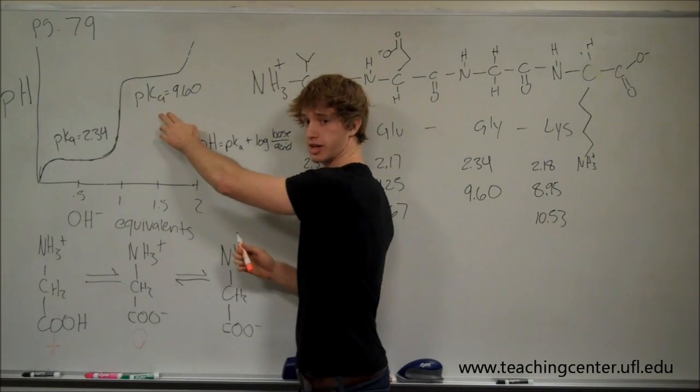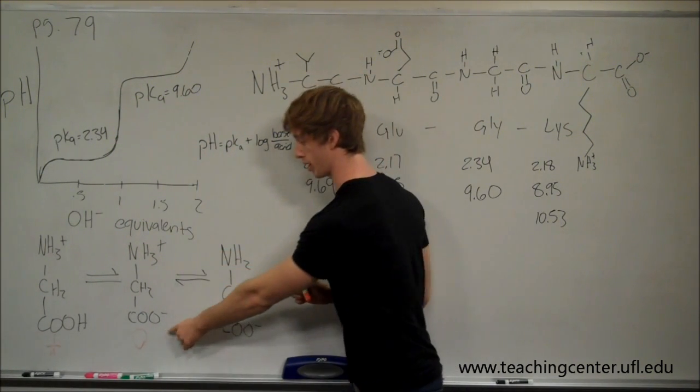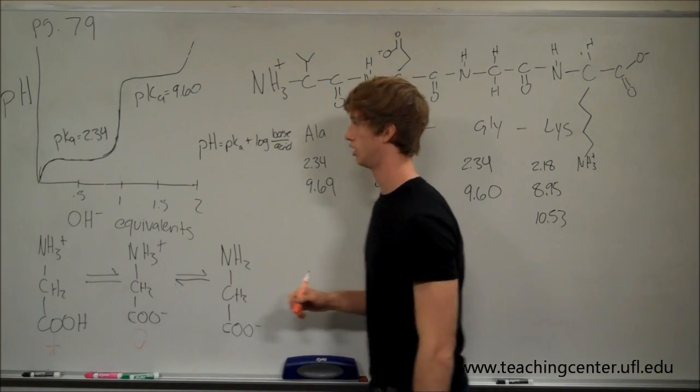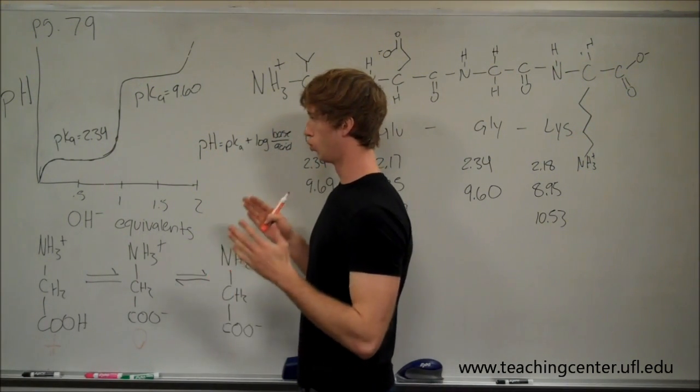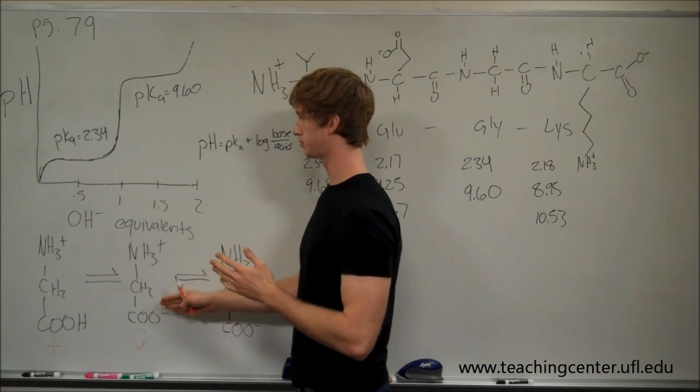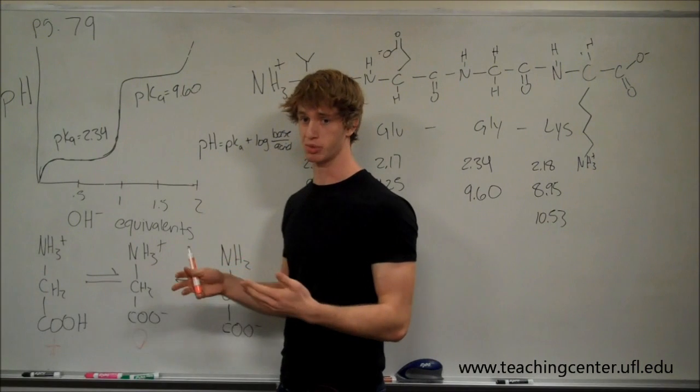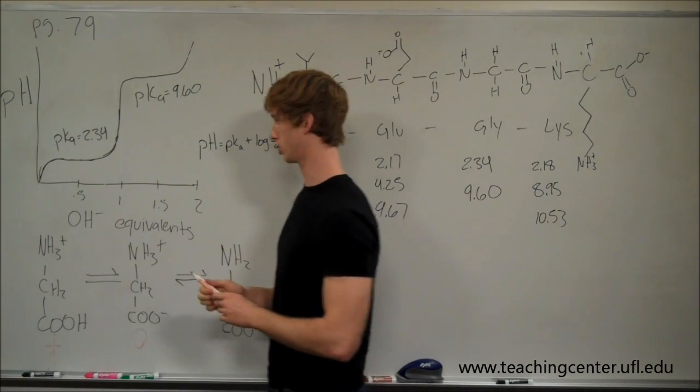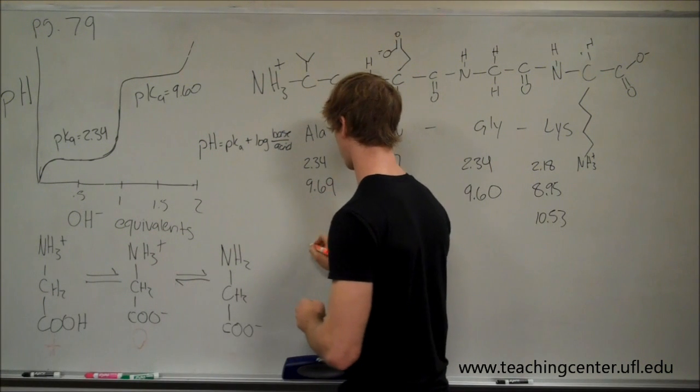Same thing goes for the second pKa. We're going to have an equal amount of this, in this case, now this is the acid and this is the base. So how are we going to find the point at which this exists? Well, it's actually pretty simple. What you do is you just take the average of the two pKa's.